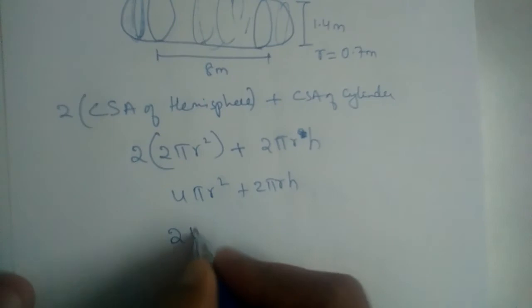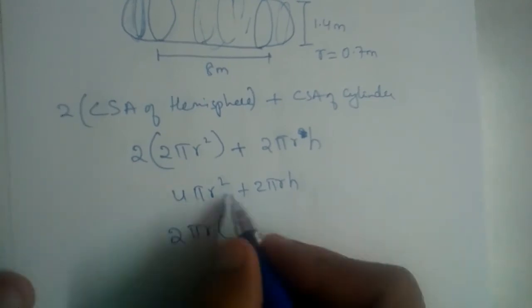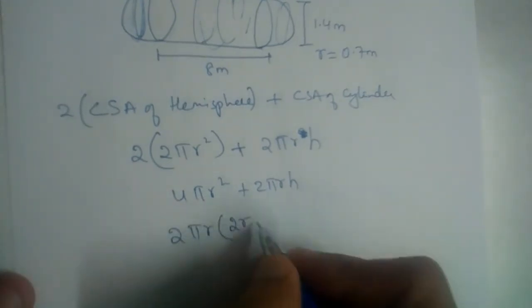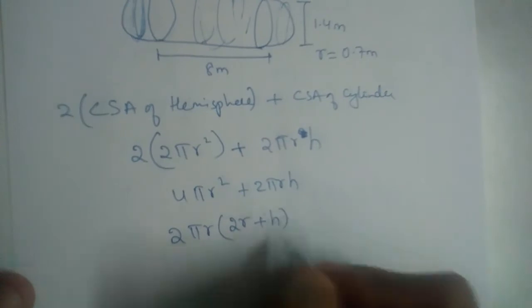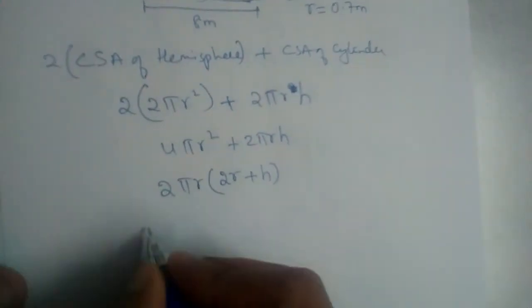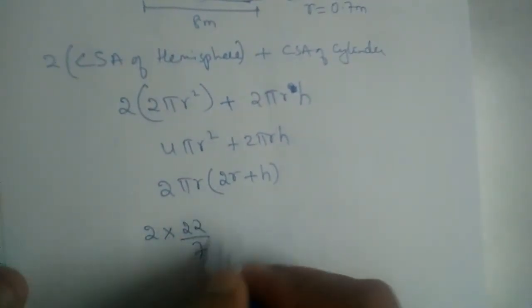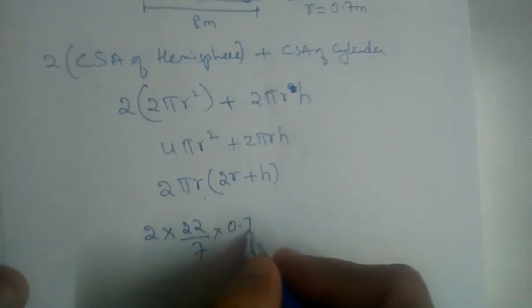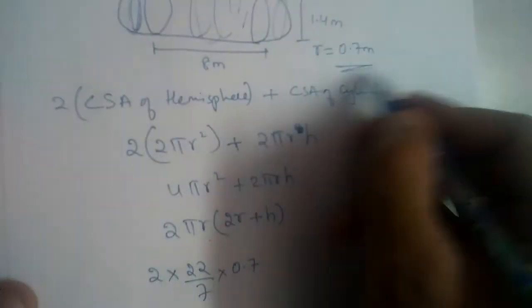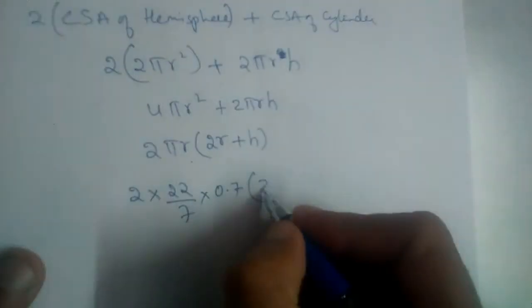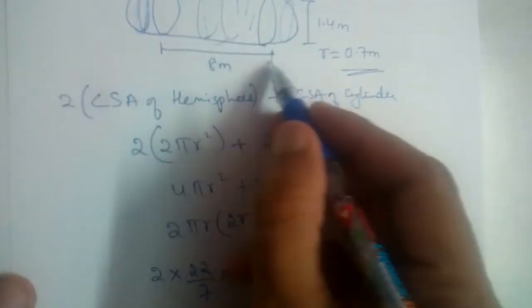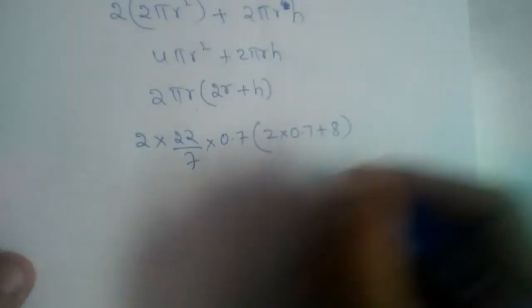Let us substitute the values. 2 into π is 22/7, r is 0.7, r is 0.7 and 2 into 0.7 plus height, height of the cylinder is 8.